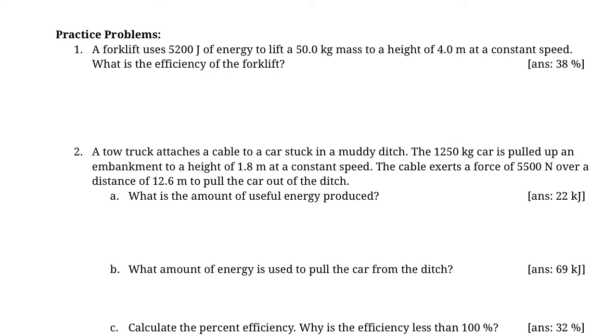In this question, practice problem one, we have a forklift using 5200 joules of energy to lift a 50 kilogram mass a height of four meters at constant speed. Think about it: is this going to be the energy input or the energy output? In this case, because that's how much is actually used by the machine, that's going to be the input. So the energy in is 5200 joules.